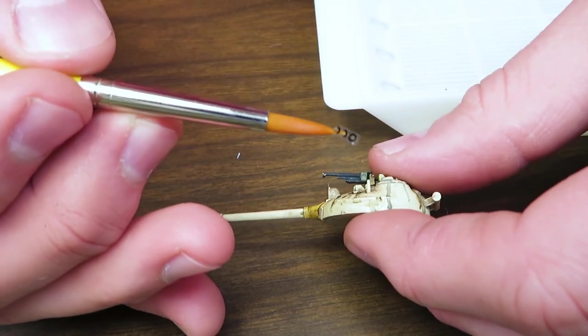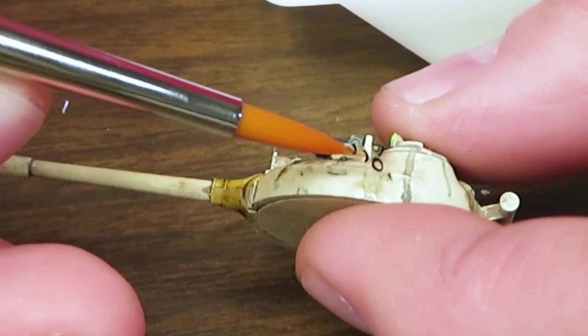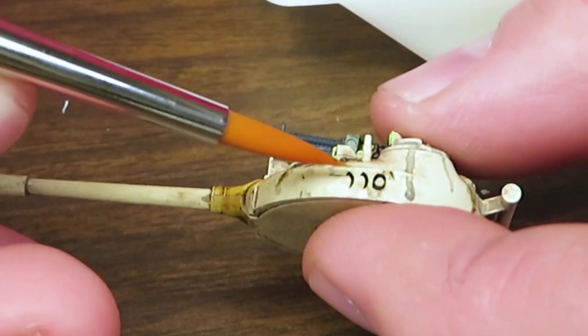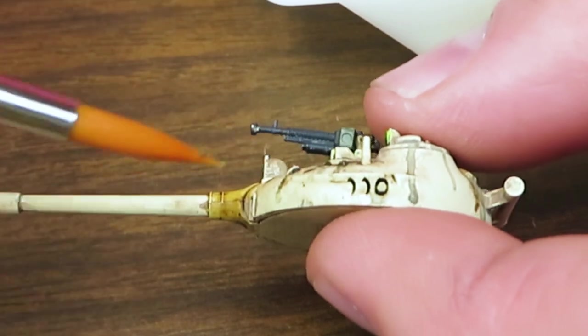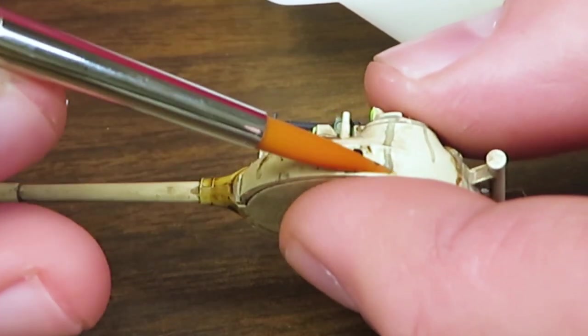So we've got our decal on our brush. Picked it up out of the water because I let it sit too long. I'm just going to apply it to the side of the turret like so. Let it sit there.